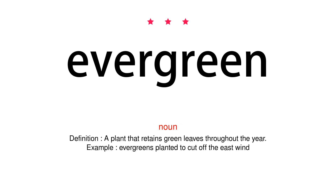Noun. Definition: A plant that retains green leaves throughout the year. Example: Evergreens planted to cut off the east wind.